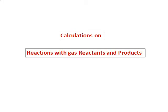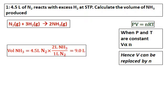Next, we are going to do some calculations on reactions which have gas reactants and products. 4.5 liters of nitrogen react with excess hydrogen at STP. Calculate the volume of ammonia produced. Write down the equation first: nitrogen reacts with hydrogen to give ammonia, and balance the equation.